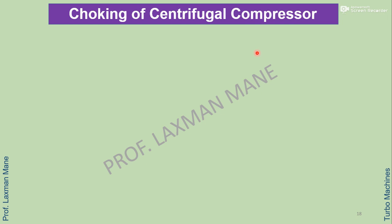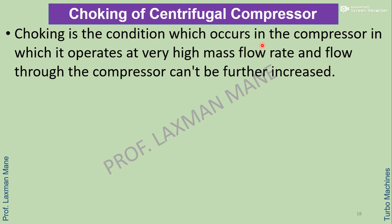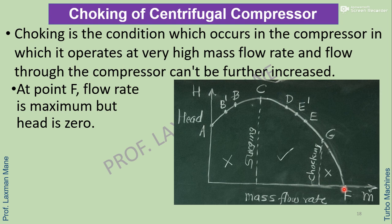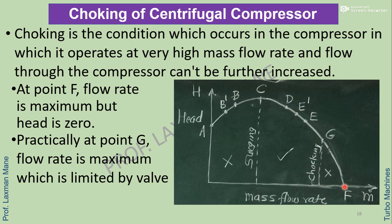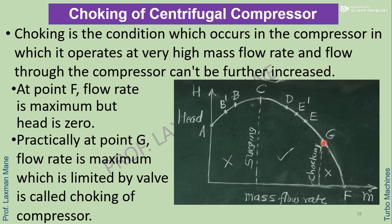Choking of centrifugal compressor: choking is the condition in which the compressor operates at very high mass flow rate and flow through the compressor cannot be further increased. From the diagram, at point F flow rate is maximum but head is zero. Practically, at point G flow rate is maximum but is limited by the throat — this is called choking of the compressor. Beyond this point, mass flow rate cannot be further increased.